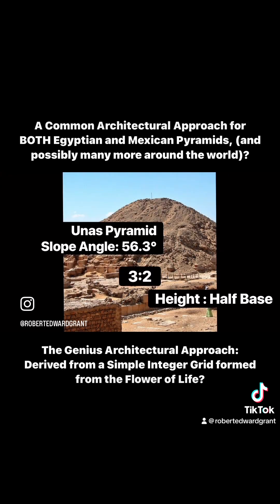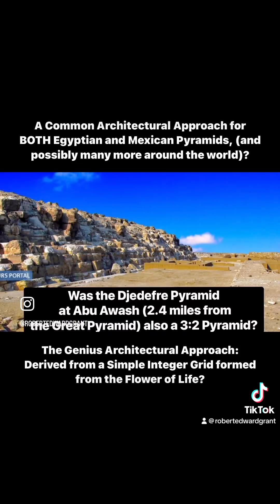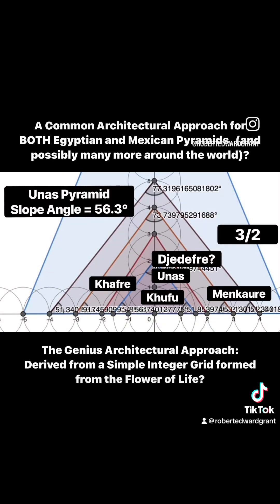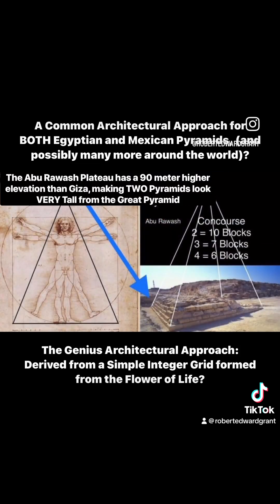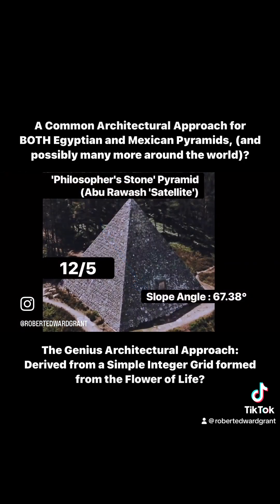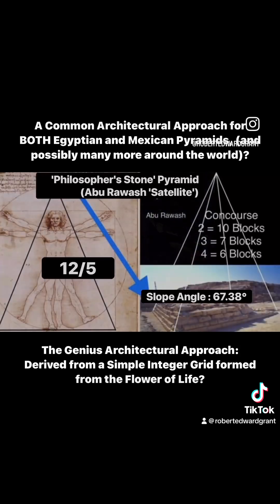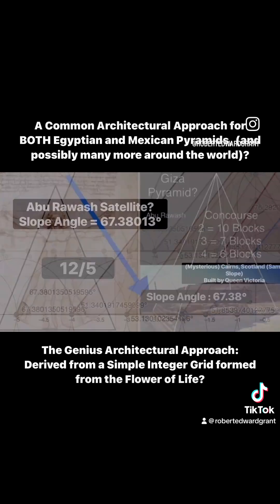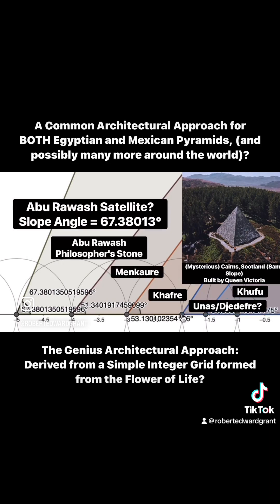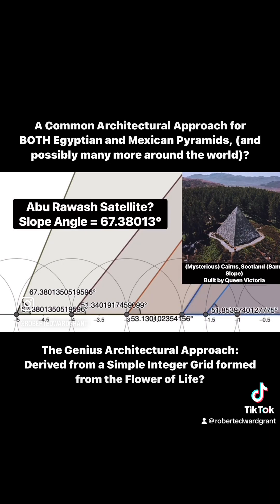Beyond this, what about three over two, which seems to be missing? Is that the Unas Pyramid, supposed to have a 56-degree angle, or possibly the Jedefre Pyramid in Abu Rawash, which is only two and a half miles away from Giza? I believe it's one of the pyramids that is potentially missing, along with a 12-over-5 relationship of the famed Philosopher's Stone. Abu Rawash sits 90 meters higher than the Giza Plateau. There are also examples in Cairn, Scotland, built by Queen Victoria herself, and one in Rome — an enigmatic pyramid structure that is also a satellite structure just behind what is supposed to be the Jedefre Pyramid, long destroyed.